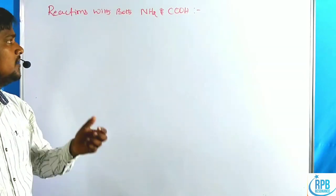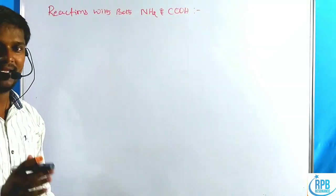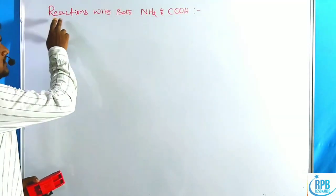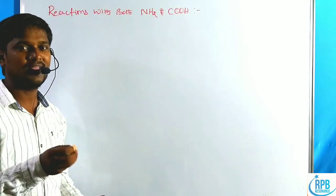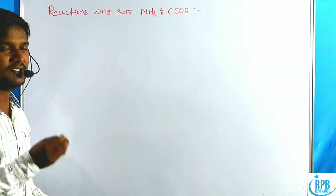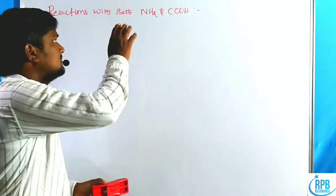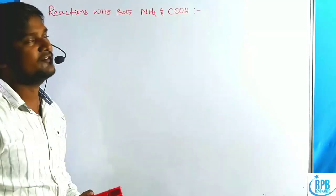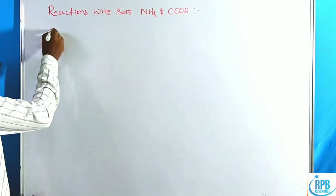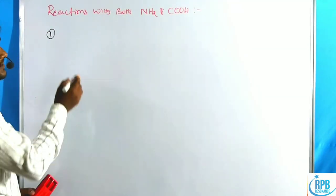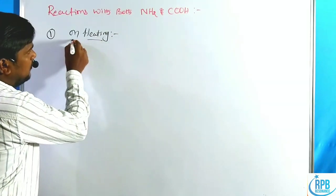In this lecture we will discuss those reactions with NH2 and COOH simultaneously and at the same time — reactions with both NH2 and COOH functionality. Amino acid is a bifunctional group, so these two functional groups are involved in the reaction at a time. Now let us discuss the first reaction: reactions on heating.